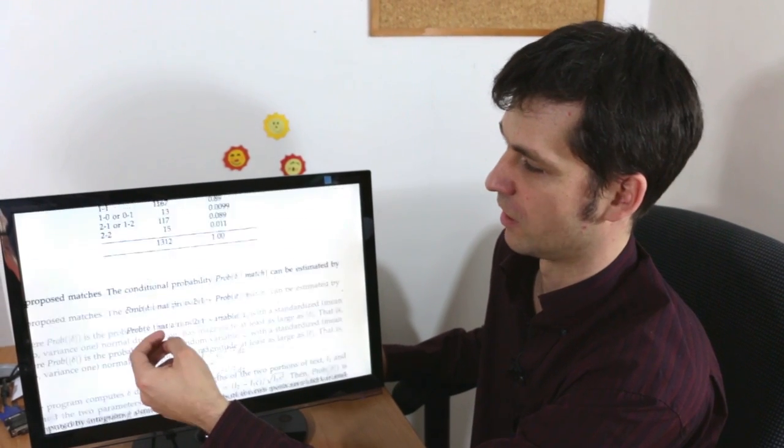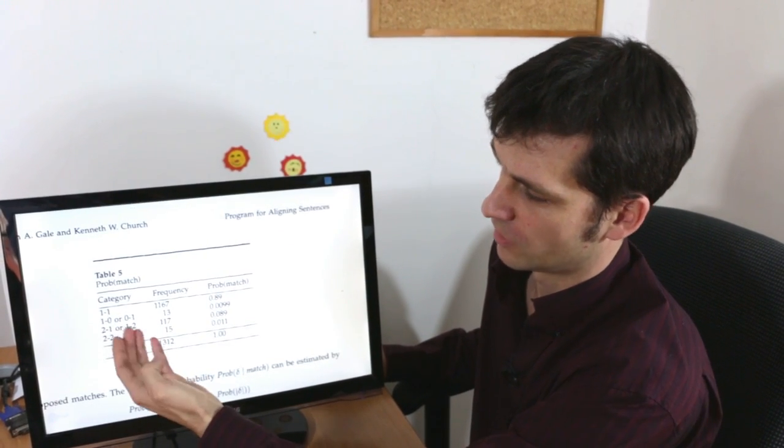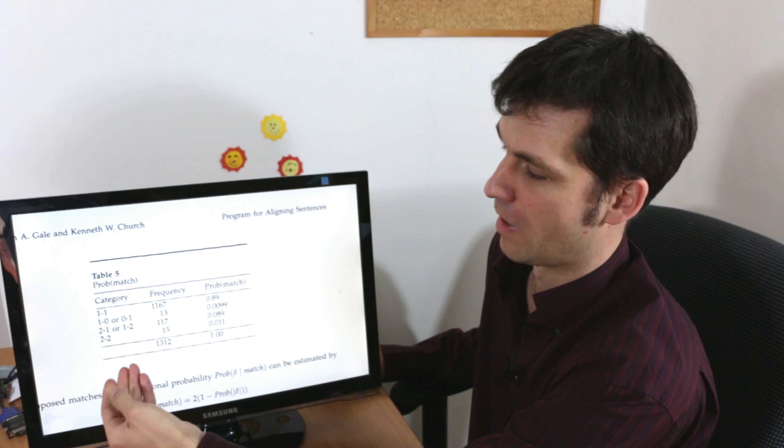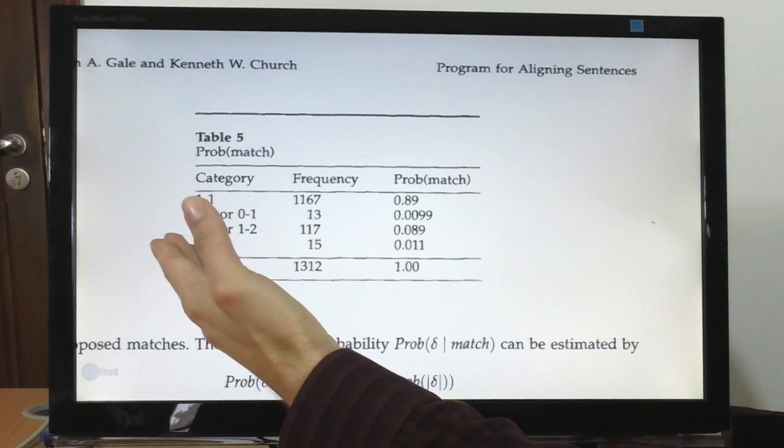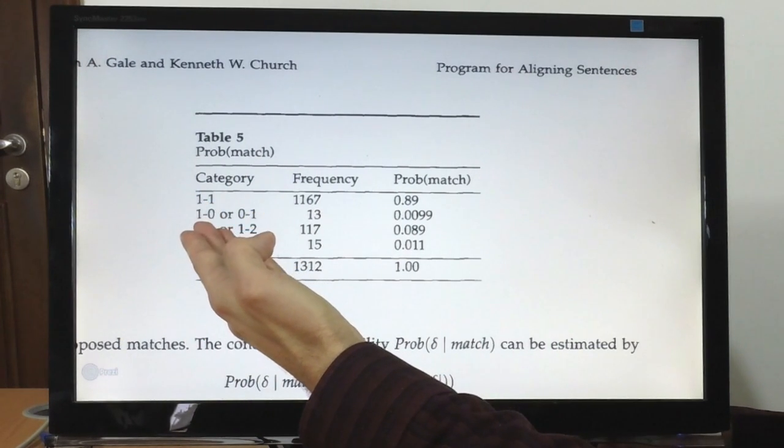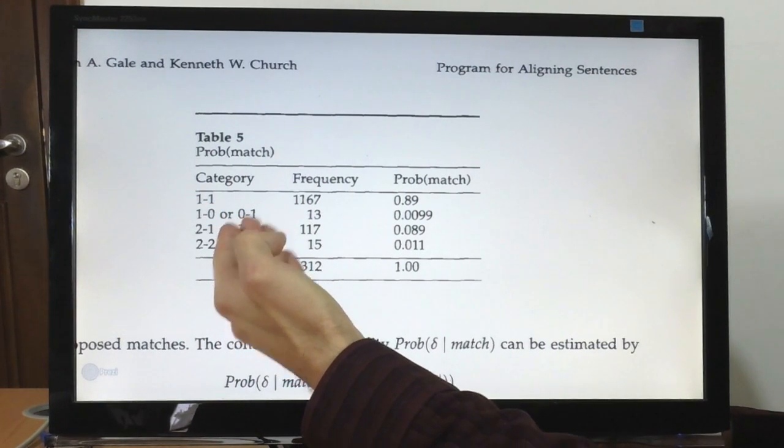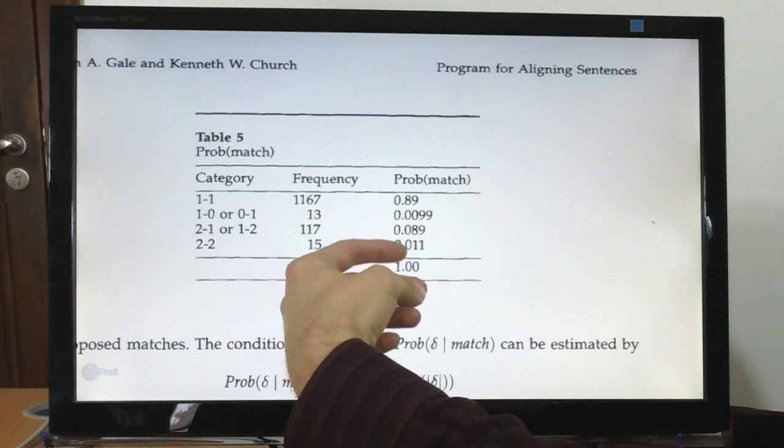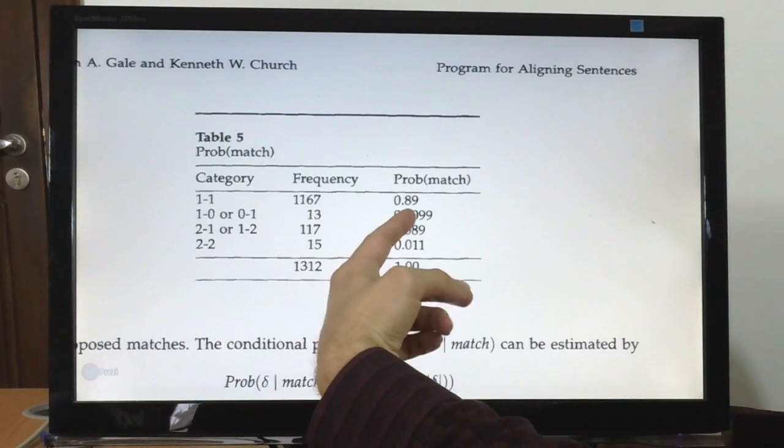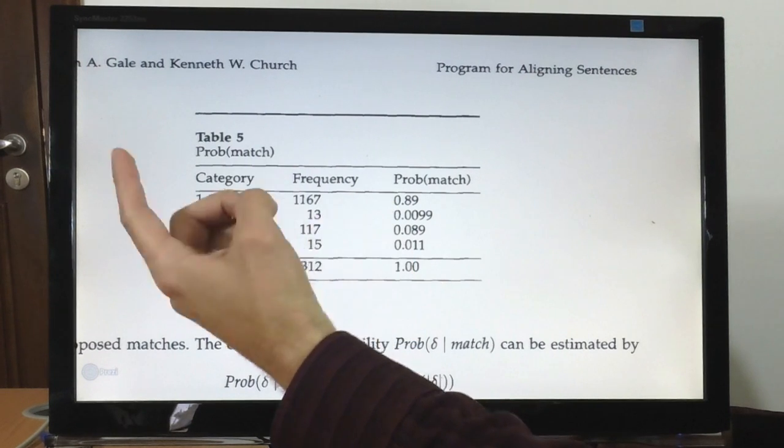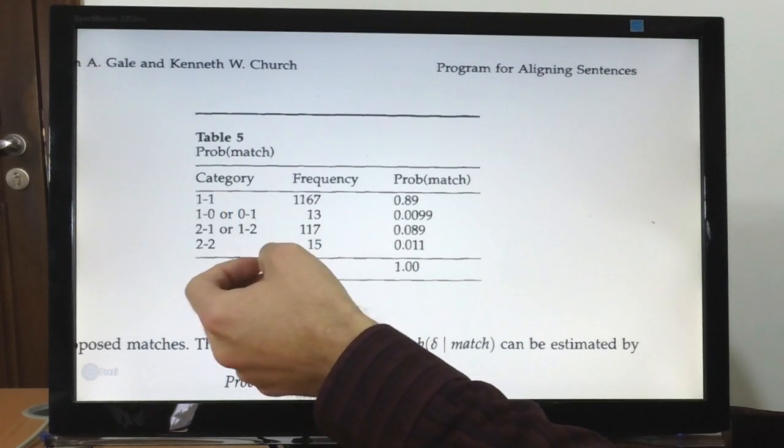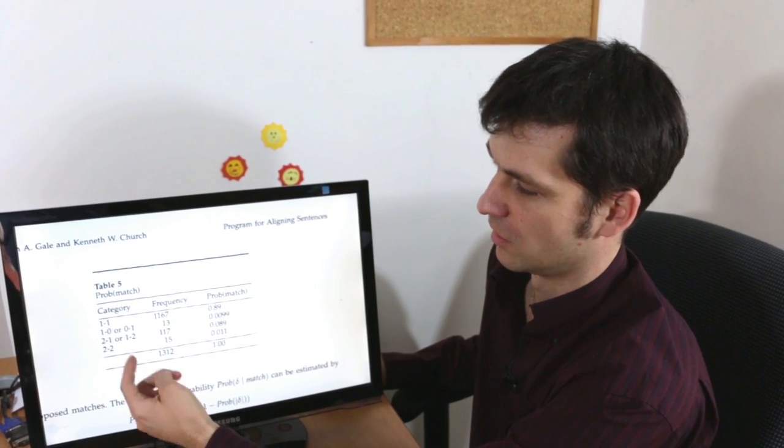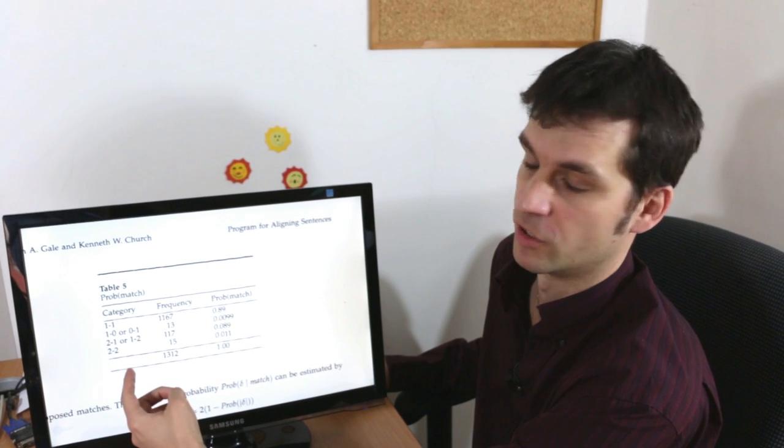And here again Gale-Church look at the data so they observe that for particular type of match, one sentence to one sentence or one sentence being inserted or one sentence being deleted, there is a particular probability of this happening. So in their bank reports about 90% of sentences align well one to one and the rest is for other cases considered by the algorithm.